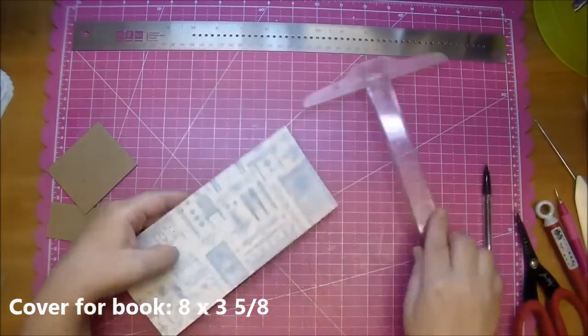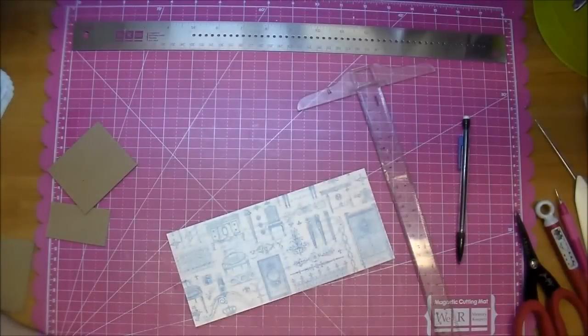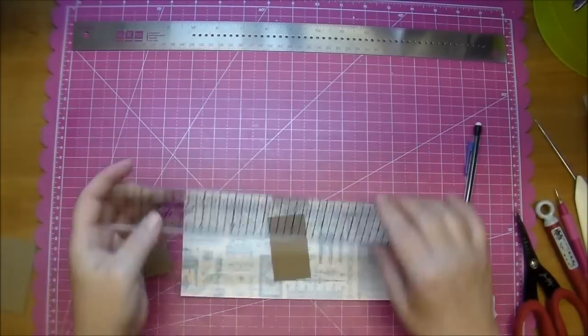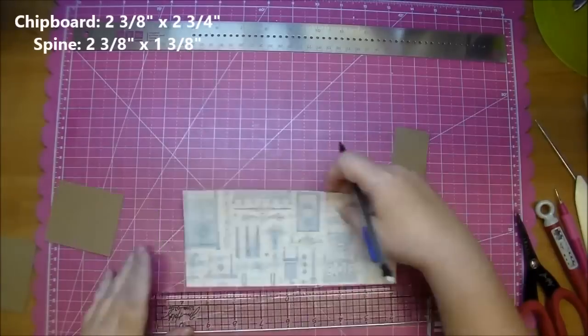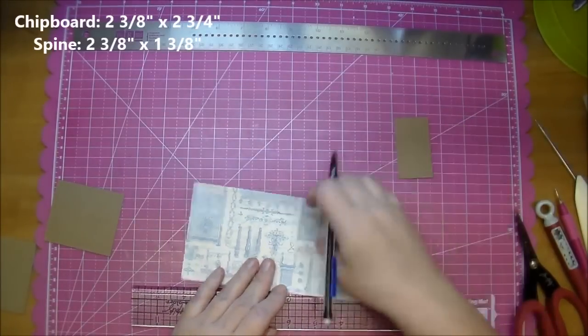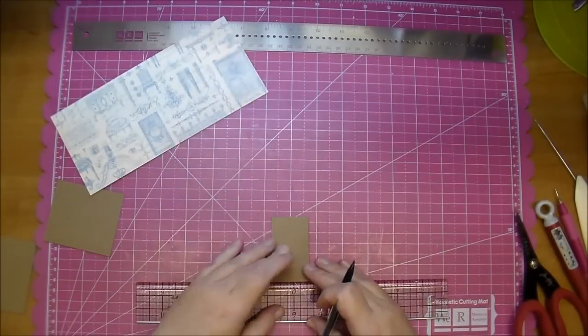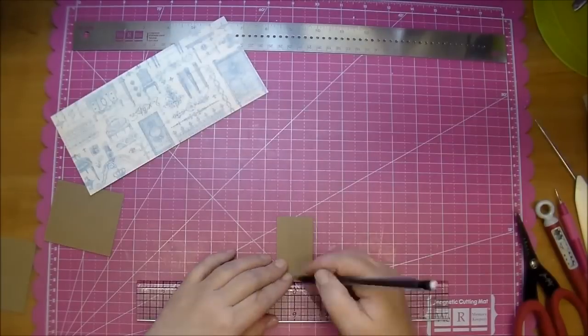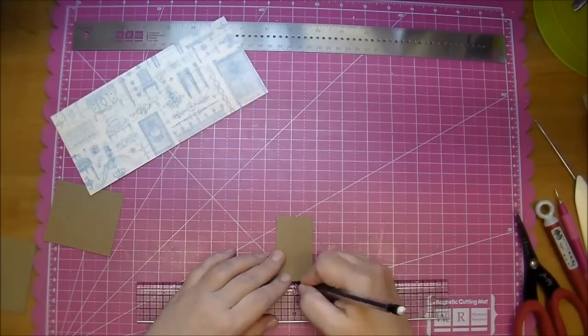So my chipboard covers are two and three eighths inch tall by two and three quarters. So I decided I needed an eight by three and five eighths inch piece of pattern paper which will wrap around my covers and my spine. I wanted to leave about a half inch on both the top and then another half inch on the bottom to be able to wrap around it. So I am finding the center of my spine and the center of my paper and that way it makes it easy for me to line up when I glue it down.